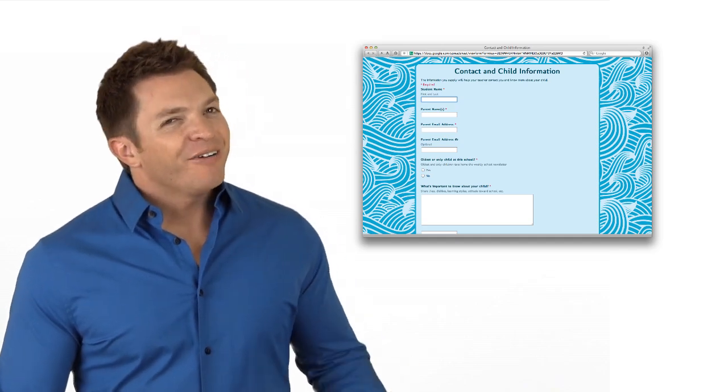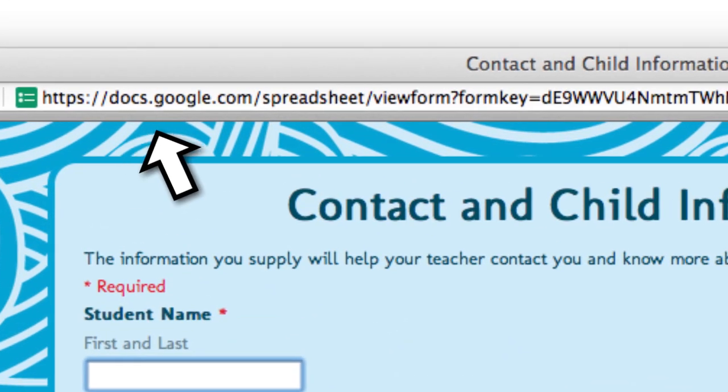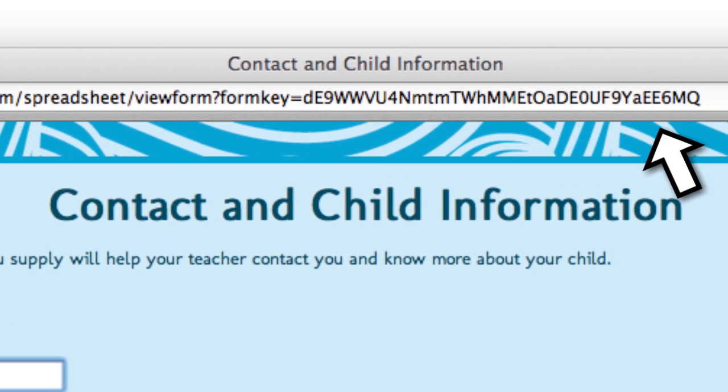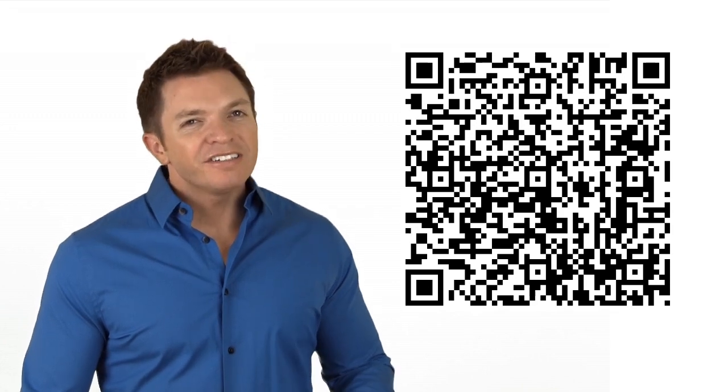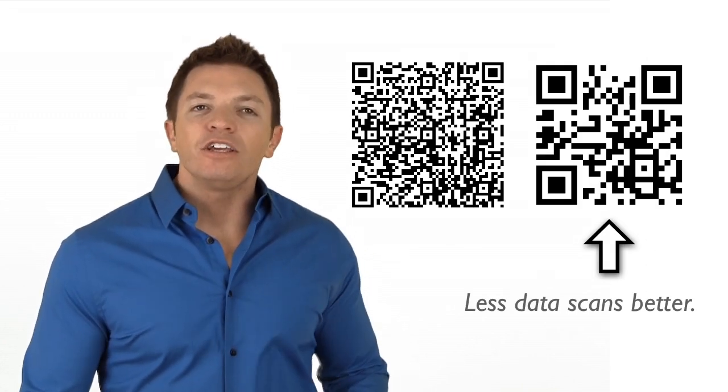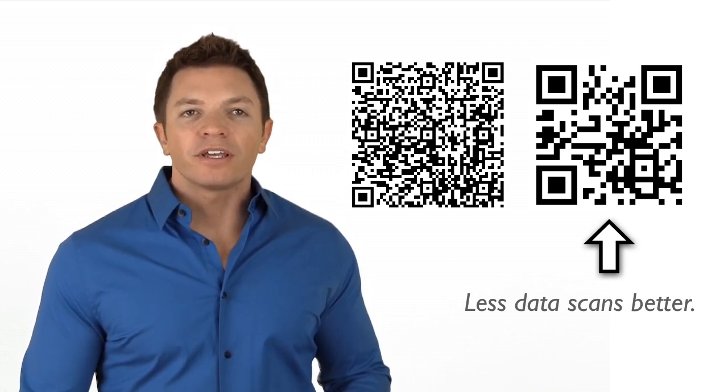Google Forms, part of Google Docs, is a great way to collect information. However, the URL Google provides for your form is comically long. No one would ever type this. This URL can be copied and pasted into a QR code generator. However, since the URL is so long, the QR code will be very dense. Dense codes don't scan as well as simple codes. I suggest using a URL shortener on long URLs before turning them into a QR code.